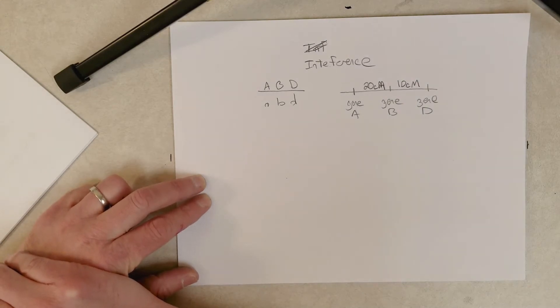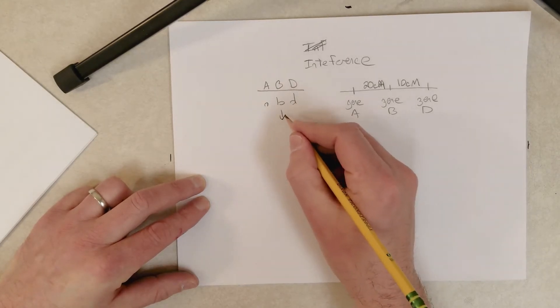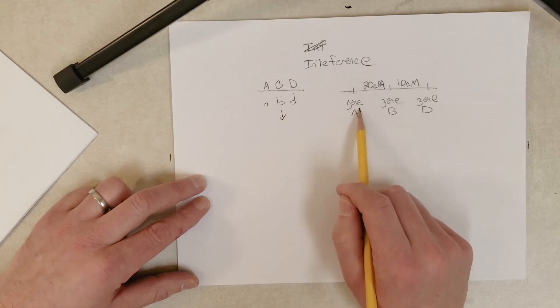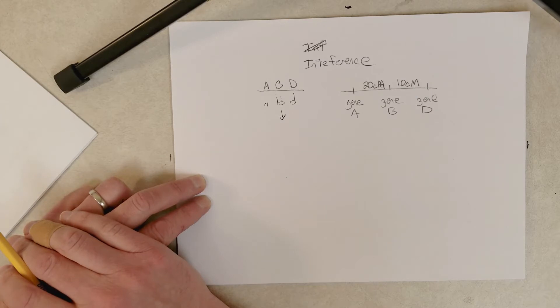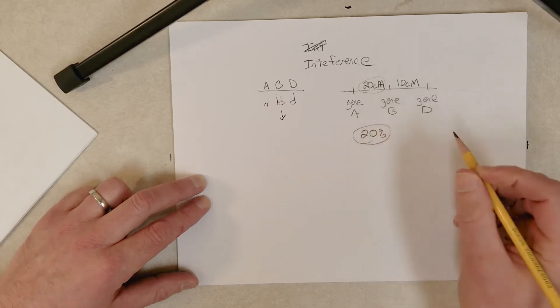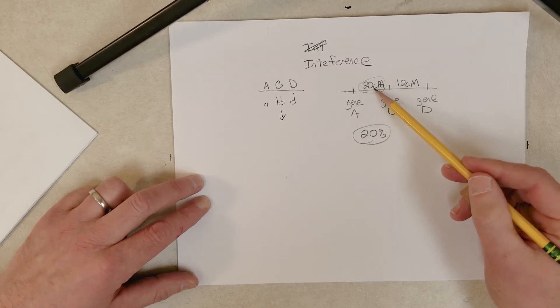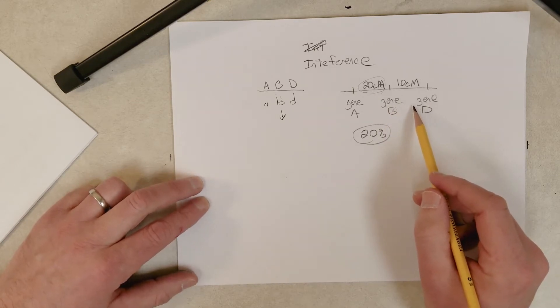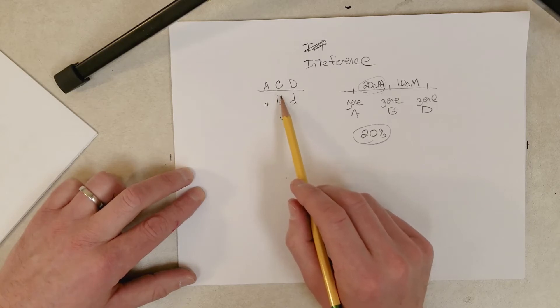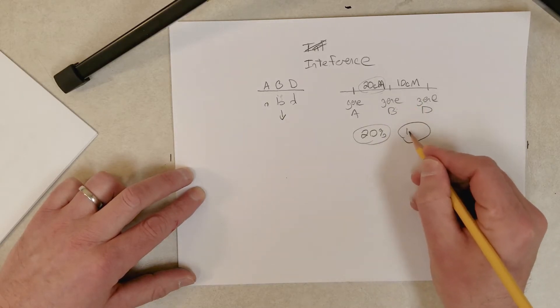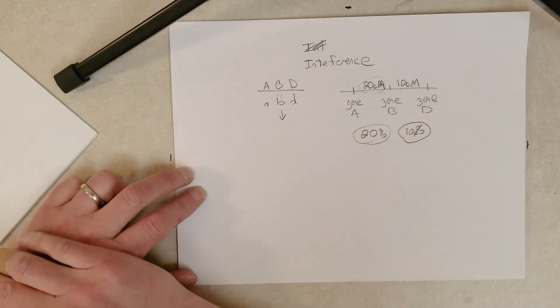Now, if I were to ask you what percentage of gametes from this individual would involve a crossover between gene A and gene B, you would look at this 20 and you would say 20 percent. So 20 percent of the gametes would involve a crossover between gene A and gene B. Same thing for these guys right here. What if I were to ask you what percentage of the gametes derived from this individual would result from a crossover between genes B and D? That would be 10 percent, right? Because one centimorgan is 1 percent crossing over, 1 percent crossover gametes.